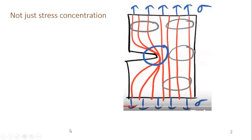Let us start with this sketch. We have a sample with a sigma load applied — a uniaxial load in one direction — which is why we see vertical lines representing the direction and intensity of the stress. We can take any element inside the sample. All elements away from the notch show vertical stress lines. But near the discontinuity, the line is not able to continue straight.